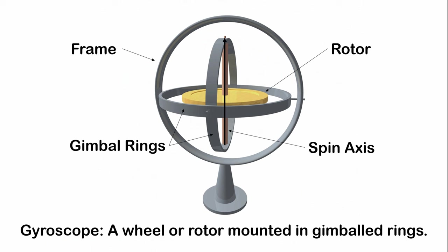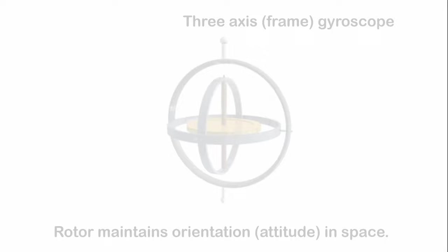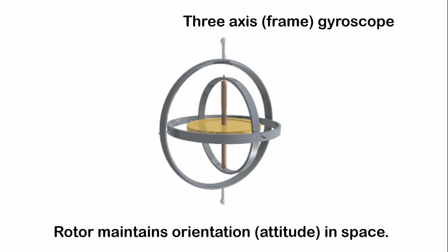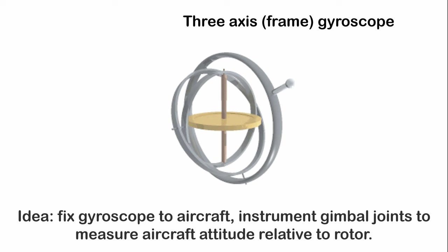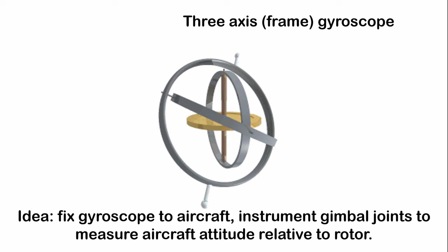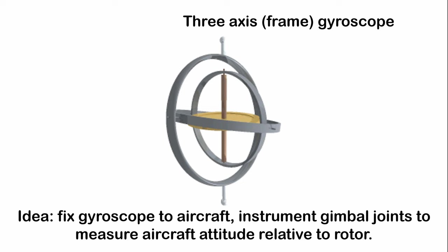A gyroscope is essentially a spinning rotor mounted in gimbaled rings. It operates on the principle that a body, here the rotor, resists rotation about its spin axis. Therefore, the spinning rotor tends to maintain its attitude in space and becomes a reference for the gimbal rings. If we were to fix the gyroscope on an aircraft, where the joints of the gimbal rings are somehow instrumented, then the gyroscope measures attitude relative to the spinning rotor. And this is the key piece of information that leads to automatic flight control.